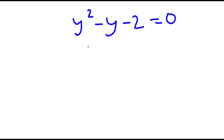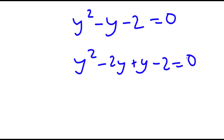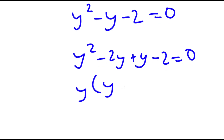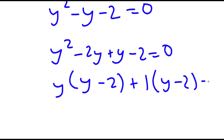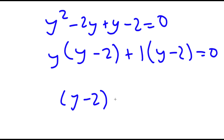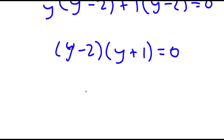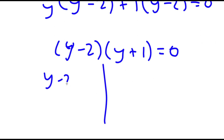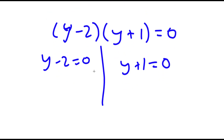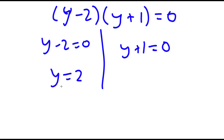I'm going to factor this by rewriting it as y squared minus 2y plus y minus 2 equals 0. Factoring by grouping gives y times y minus 2 plus 1 times y minus 2 equals 0, so y minus 2 times y plus 1 equals 0. This gives two equations: y minus 2 equals 0, so y equals 2, and y plus 1 equals 0, so y equals negative 1.